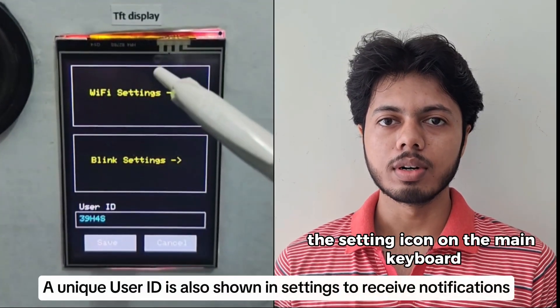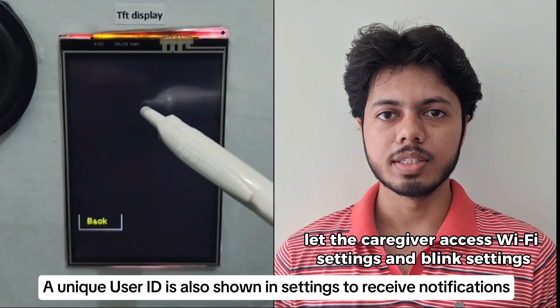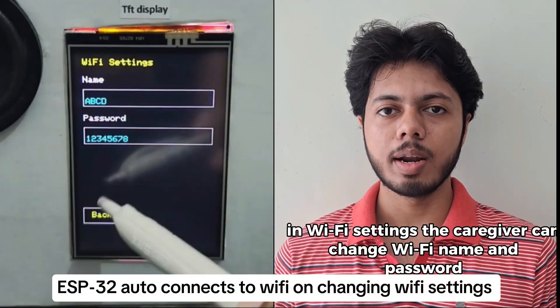The settings icon on the main keyboard lets the caregiver access Wi-Fi settings and blink settings. In Wi-Fi settings, the caregiver can change the Wi-Fi name and password.